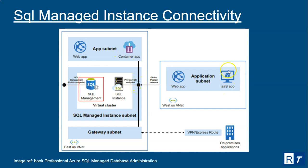Applications running in the same virtual network but in a different subnet can connect using this private endpoint. For applications running in a different virtual network, peering must be established. With peering, the virtual networks appear as the same virtual network, allowing those applications to access the private endpoint.